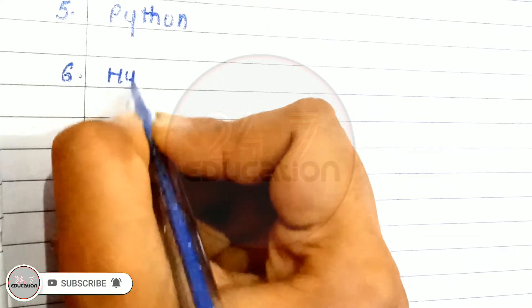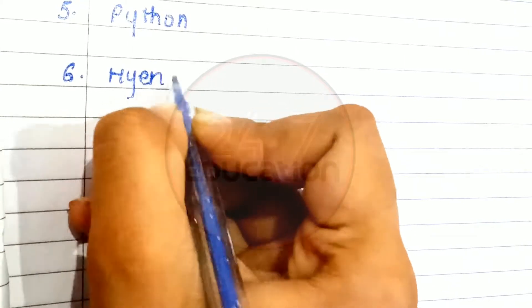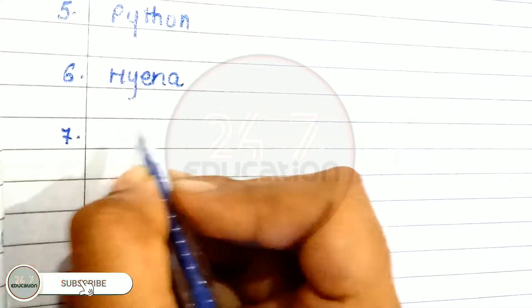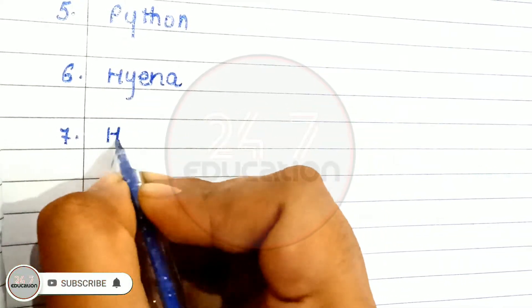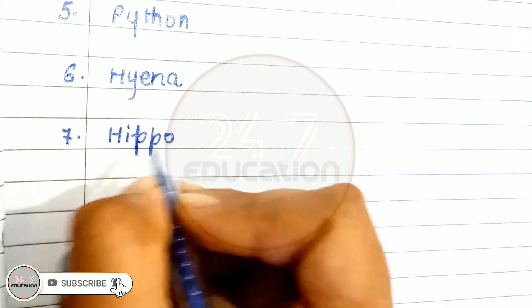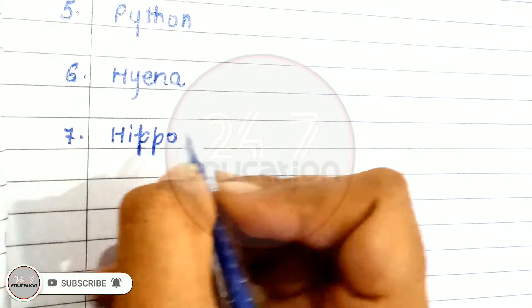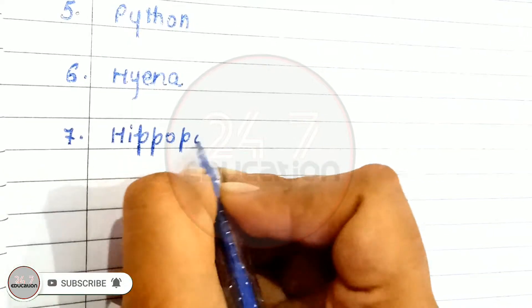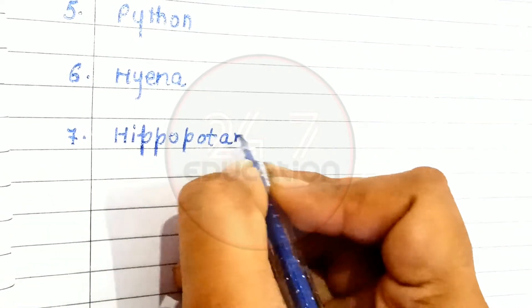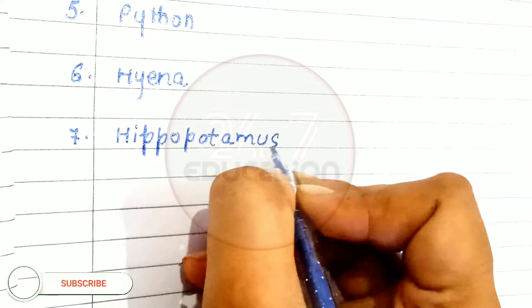Sixth, hyena. H-Y-E-N-A. Seventh, hippopotamus. H-I-P-P-O-P-O-T-A-M-U-S.